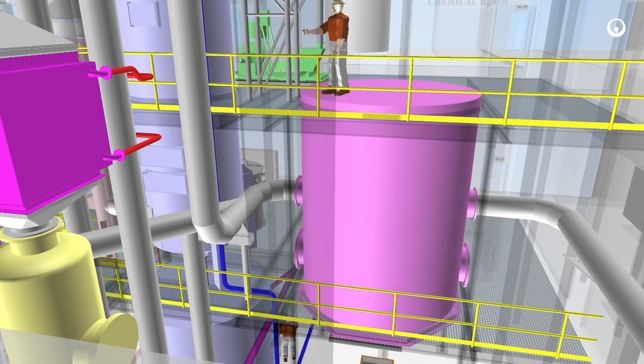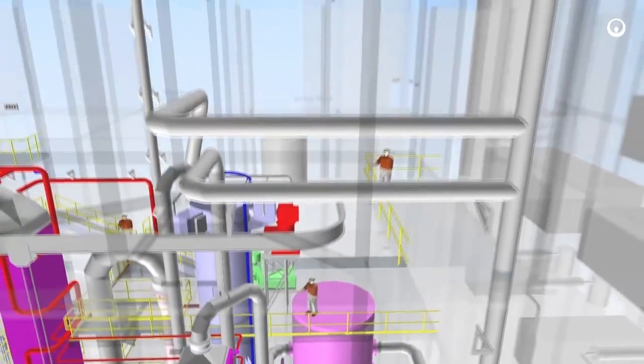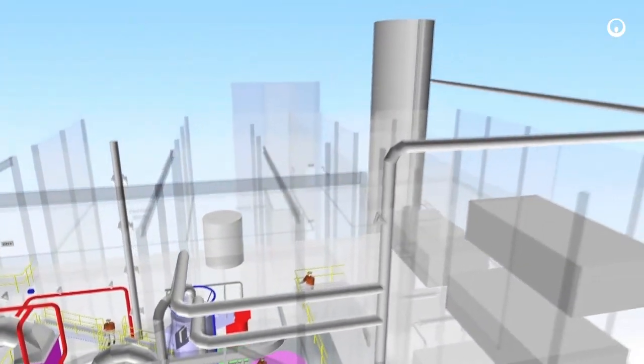Once the flue gas exits the absorber, it's fully treated for all regulatory contaminants, and it's sent to the stack for final release to the atmosphere.